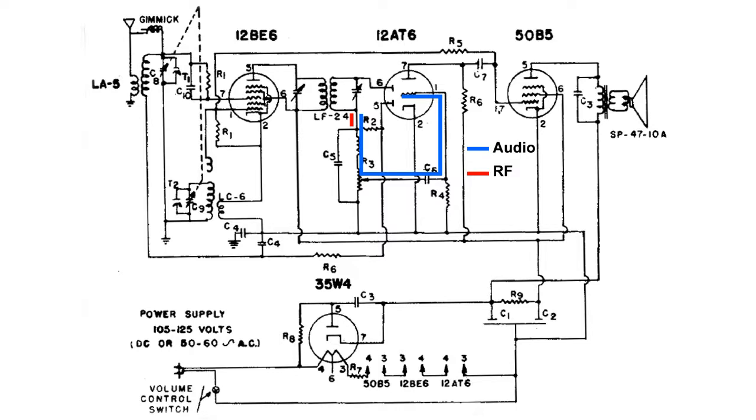Now the unwanted RF, that travels through C5 and gets grounded out.